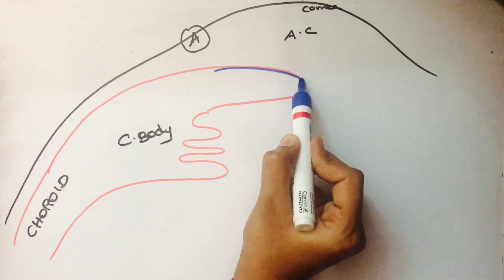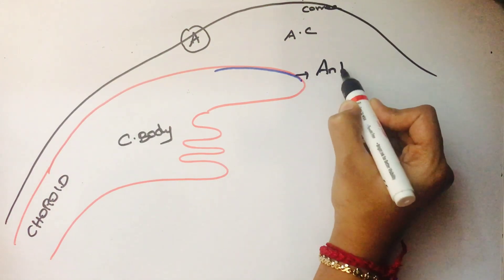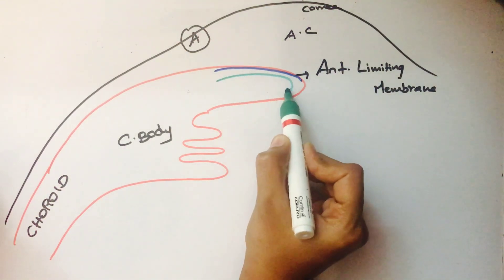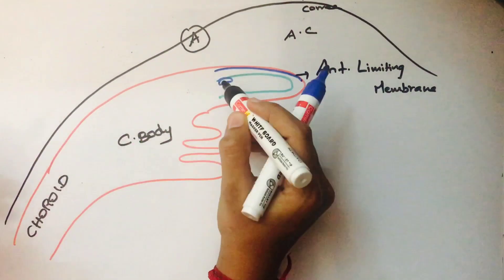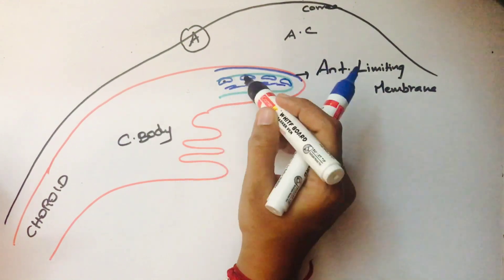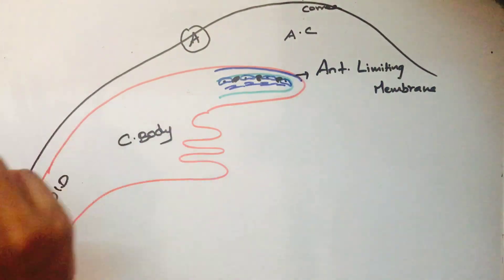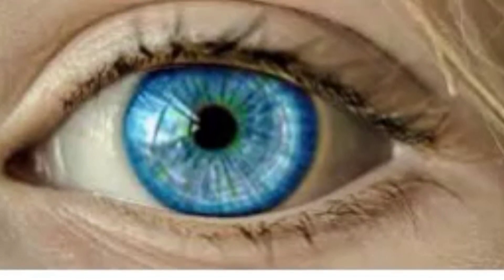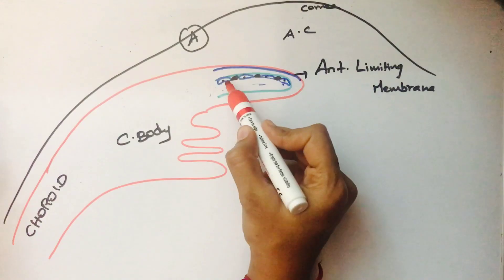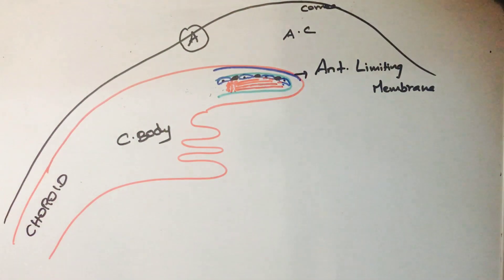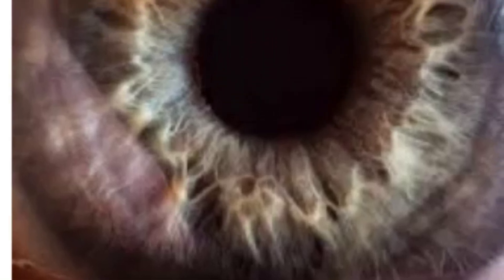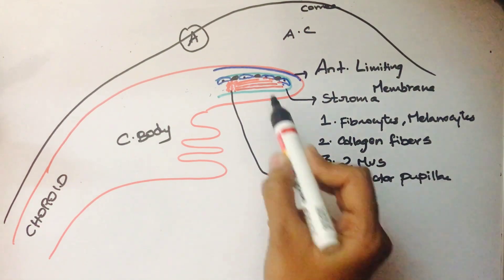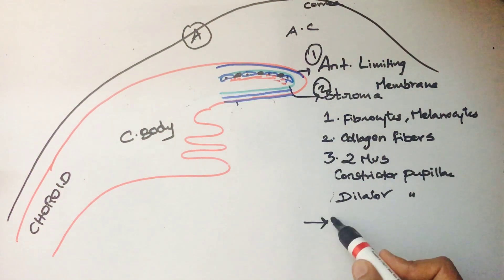Iris in detail: the microscopic structure from anterior to posterior. We have the anterior limiting membrane; just beneath that is the stroma. The stroma contains fibroblast cells and between them we have melanocytes. The number of melanocytes determines the color of the iris - maximum number gives black color, minimum number gives blue or green color.